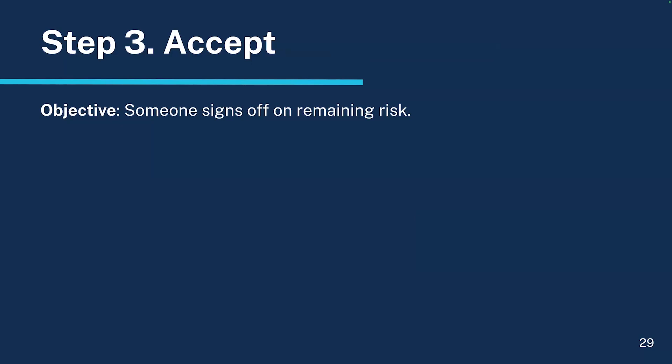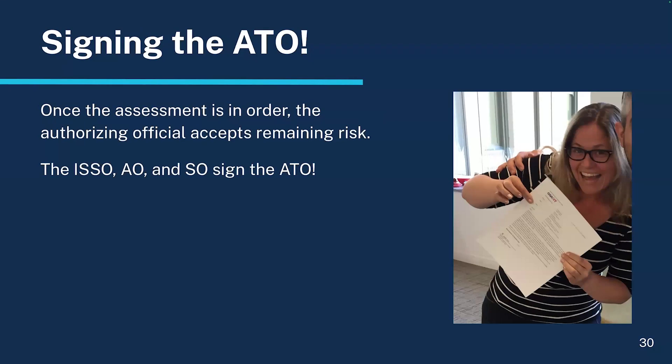Step 3: Accept. The objective is that someone signs off on the remaining risk. I framed a piece of paper when I got my first ATO memo — I have included a picture of myself, a white woman with blonde hair with a big smile, holding up an ATO memo. Once the assessment is in order, the authorizing official accepts the remaining risk. The ATO memo is signed by the ISSO, the AO, and the system owner.